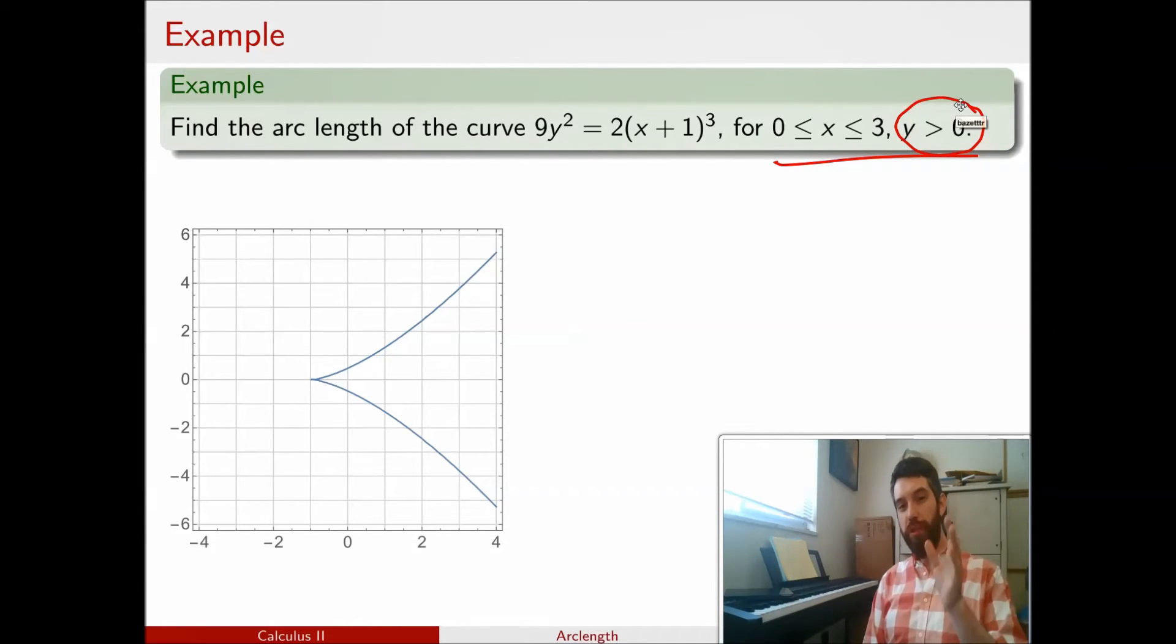So the restriction that y is greater than 0 tells me that I am only on this portion of the curve. I'm ignoring the bottom portion. And if I am going to talk about just the top portion, which is going to turn out to be the positive root, then that is a function, and I can apply the formula that we had before.